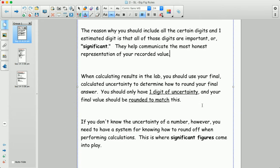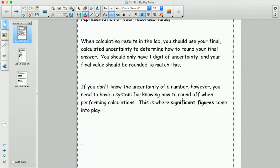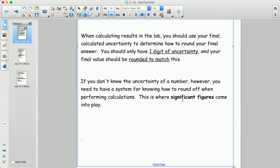In a lab you should use these rules that we've talked about: one digit of uncertainty and rounding your final value to match your uncertainty in the decimal places. That's how you'll round off in lab reports. But on test questions or just other times if you're doing math and you're not sure where to round off,